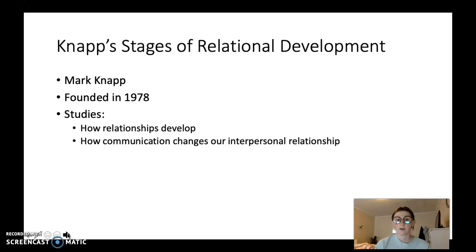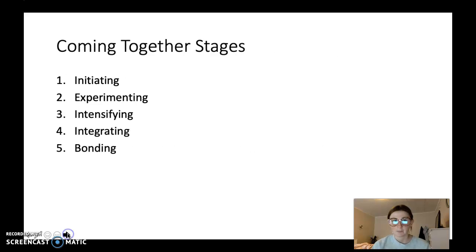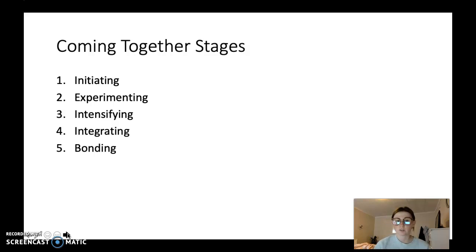This model was made by Mark Knapp in 1978, and it focuses primarily on how relationships develop and how communication can change the relationships that we have with one another. There are 10 total steps or stages to this model, five of them being the coming together stages. The first one is initiating, the second is experimenting, the third is intensifying, the fourth is integrating, and the fifth is bonding.